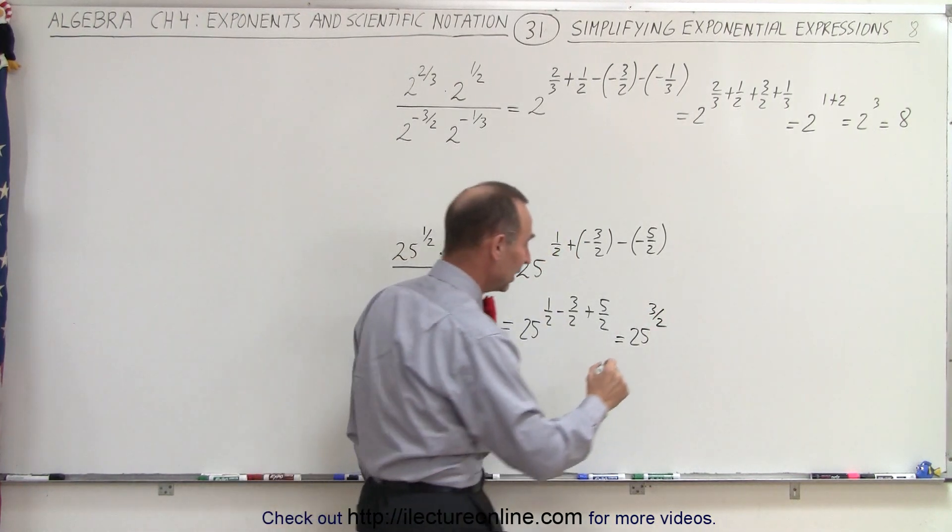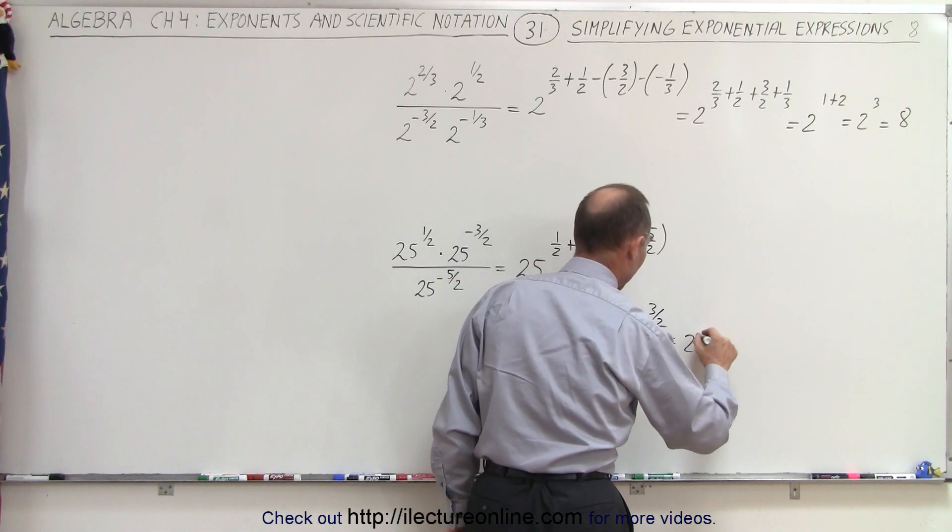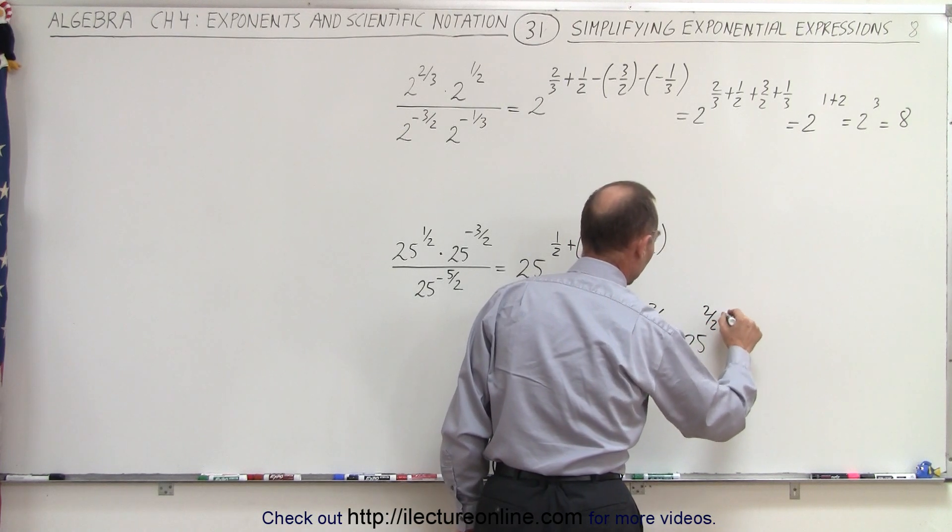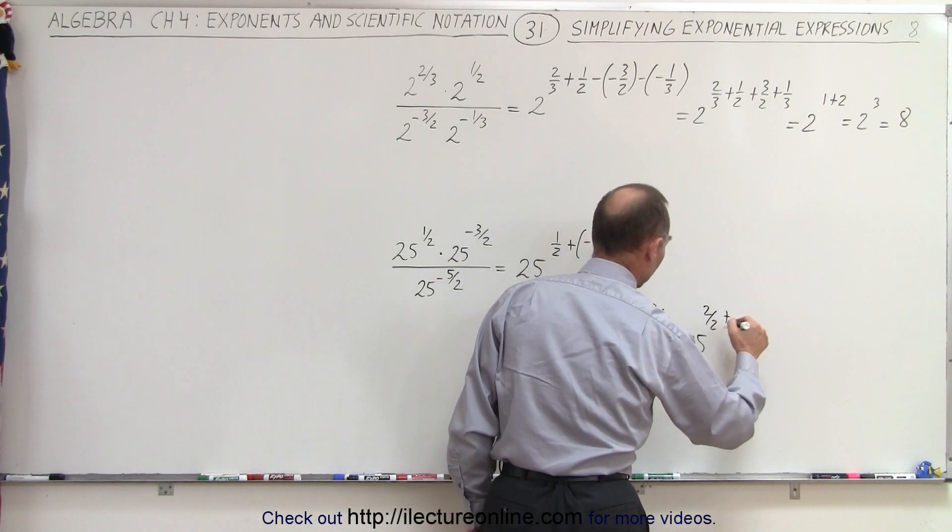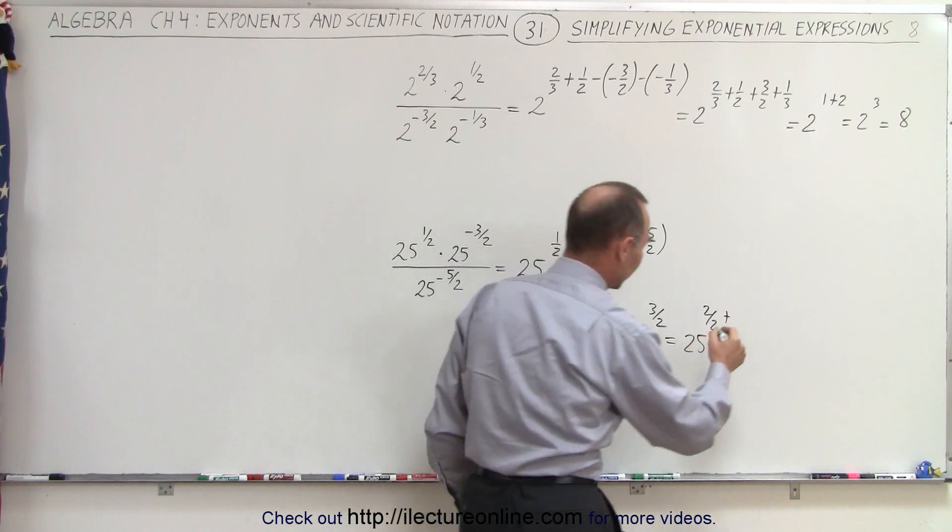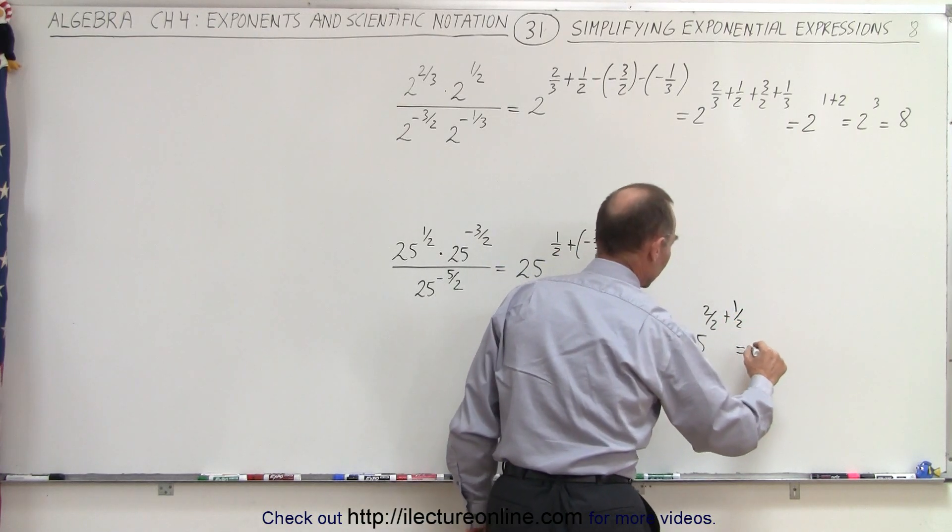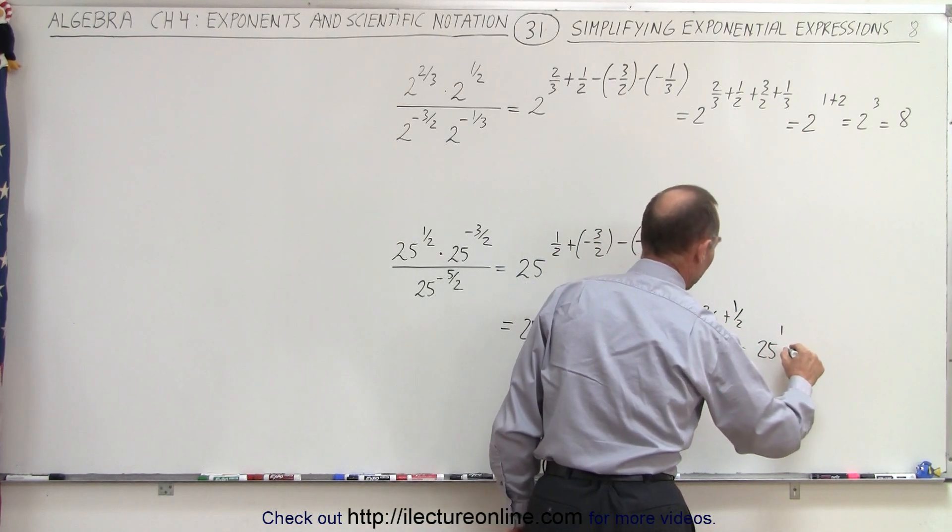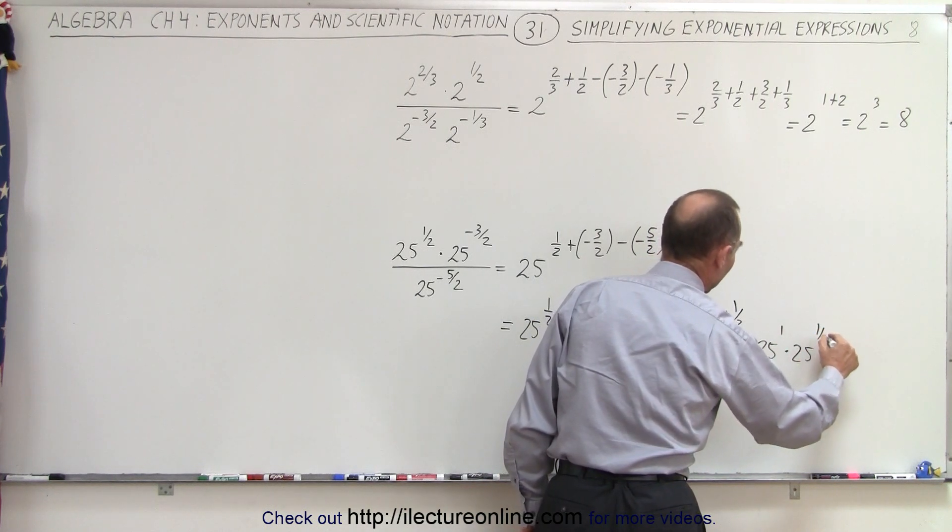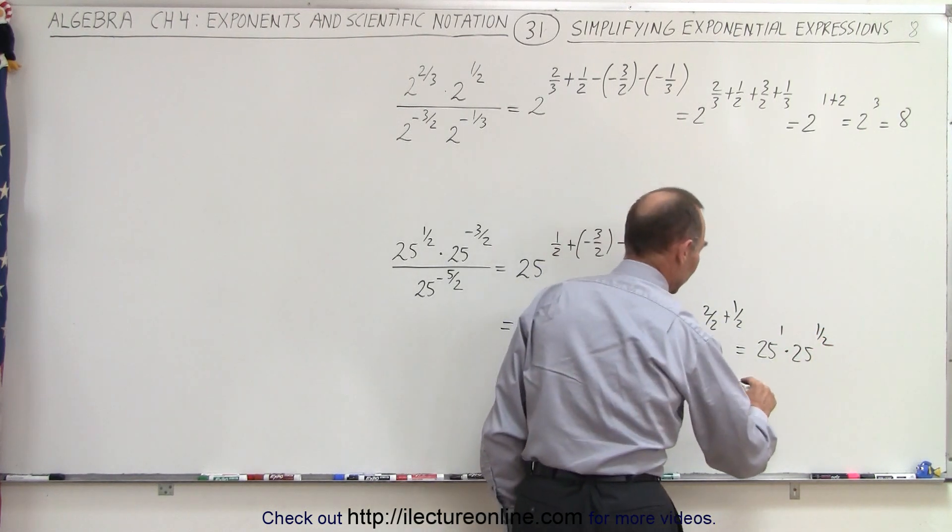Which can be written as 25 to the 2 halves power plus, or actually, yeah, plus 1 half power, which is equal to 25 to the 1st power times 25 to the 1 half power.